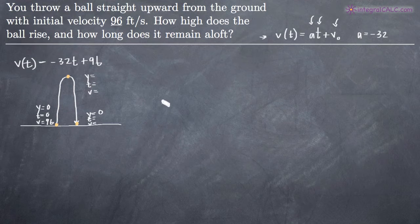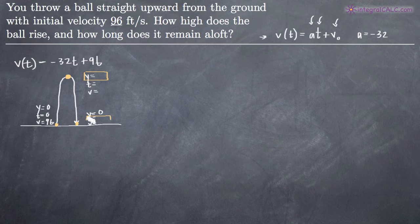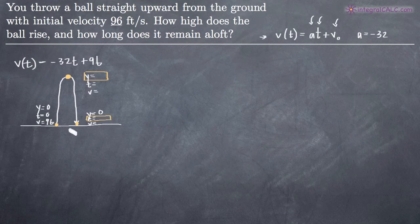We've been asked to find how high the ball rises, so we need the y value at the maximum height point. We've also been asked to find how long the ball remains aloft, which means finding the time t when the ball hits the ground. Knowing that t value will tell us the entire time span the ball is in the air. Those are the two things we need to find.